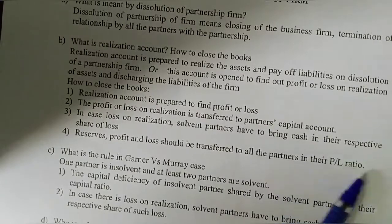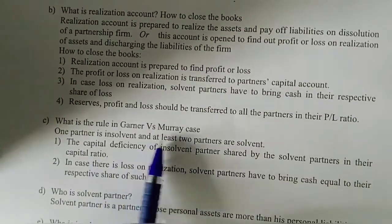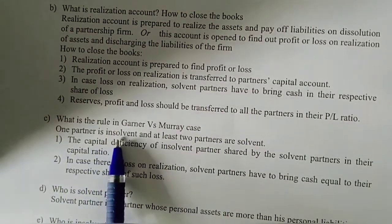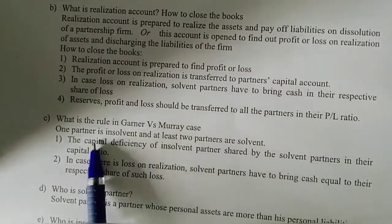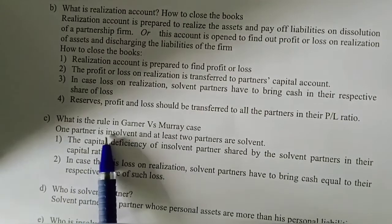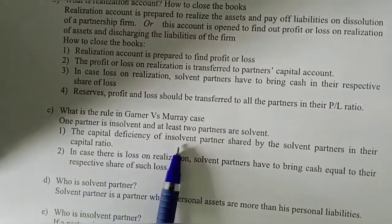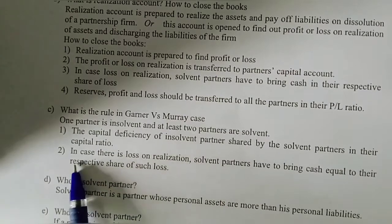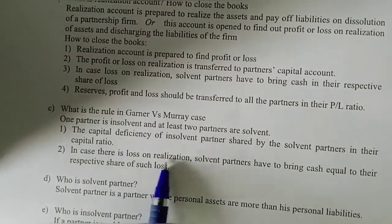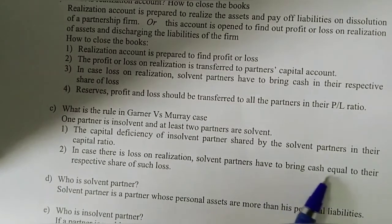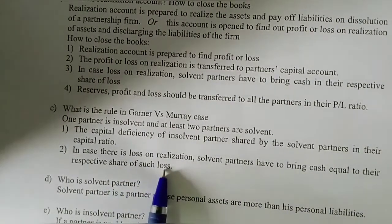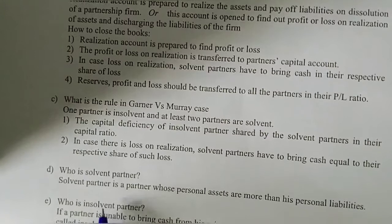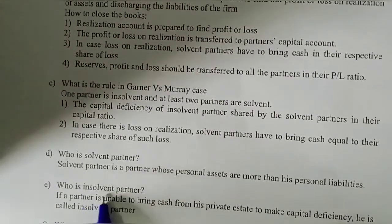Reserves and profit and loss balances are transferred to all partners in their profit and loss ratio. This brings us to the Garner versus Morrare rule, which is commonly asked in short-type questions. In this rule, one partner is insolvent and at least two partners are solvent. The capital deficiency of the insolvent partner is shared by the solvent partners in their capital ratio.